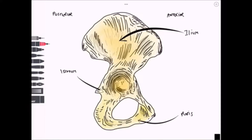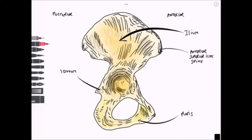We can now move on and name the major landmarks. We've got the anterior superior iliac spine, which thickens posteriorly to form the iliac crest. The anterior superior iliac spine is important for the attachment of the inguinal ligament as well as some muscles. Moving inferiorly from that, we have the anterior inferior iliac spine, which is important for the attachment of the rectus femoris muscle.